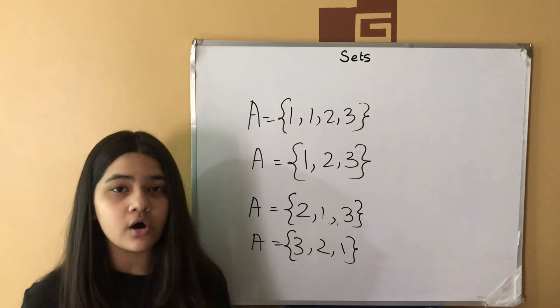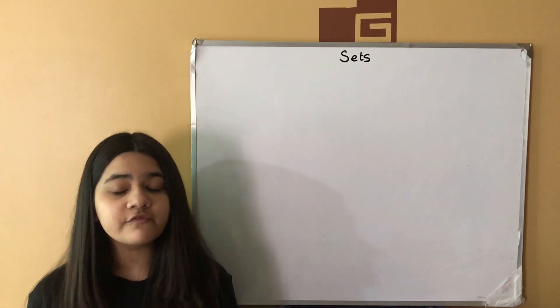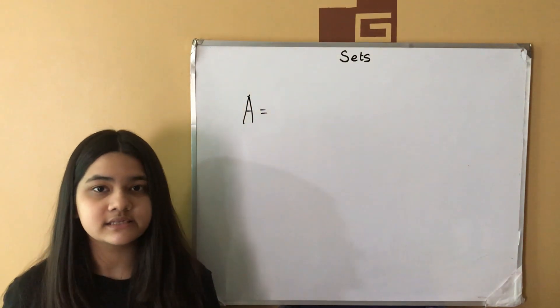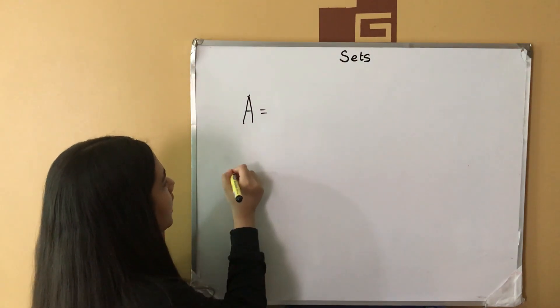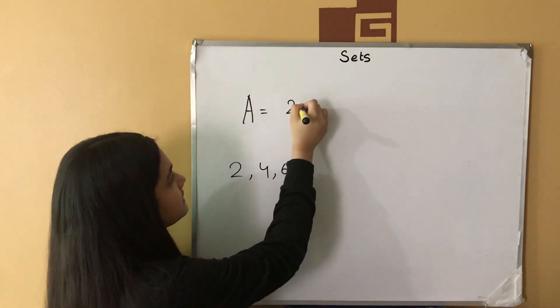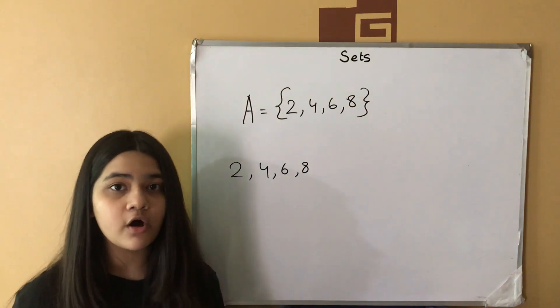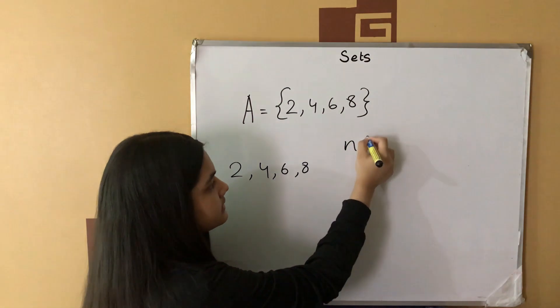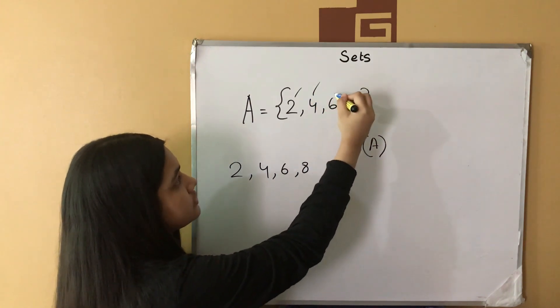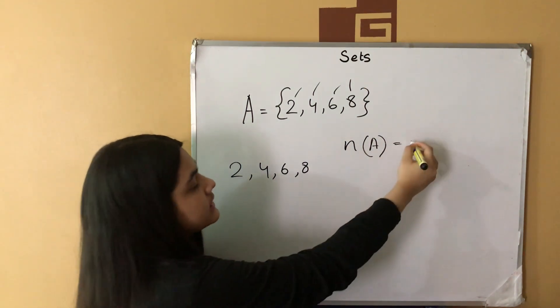We can write them in any order and they would still remain the same. The size of a set or the cardinality of a set is the number of elements in a set. Suppose this is set A and it contains all the even integers less than 10. All the even integers less than 10 are 2, 4, 6 and 8. We will write set A contains the elements 2, 4, 6 and 8 and enclose them in second brackets. The number of sets is denoted by N(A). We can see that set A contains 1, 2, 3 and 4 elements. So, the size of the set or the cardinality of set A is 4.